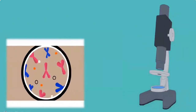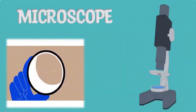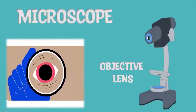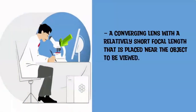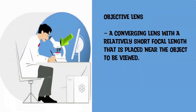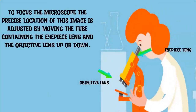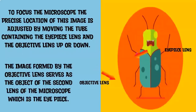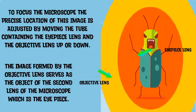Although a magnifying lens is a useful instrument, higher magnification and improved optical quality can be obtained using a microscope. The basic optical elements of a microscope are the objective lens and the eyepiece lens. The objective lens is a converging lens with a relatively short focal length that is placed near the object to be viewed. It forms a real, upside-down, and enlarged image of the object. To focus the microscope, the precise location of this image is adjusted by moving the tube containing the eyepiece lens and the objective lens up or down. The image formed by the objective lens serves as the object for the second lens, which is the eyepiece.